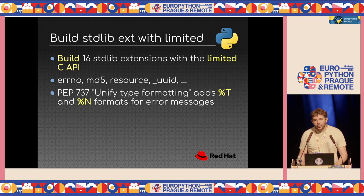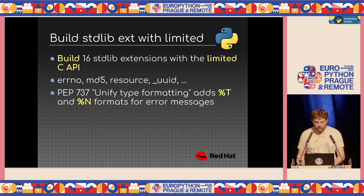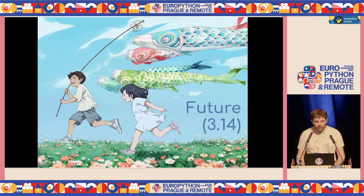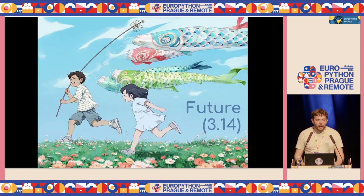For that work I also had to write PEP 737, unified type formatting, to format a type name in an error message. The PEP adds two new format specifiers: `%T` (percent uppercase T) and `%N` (percent uppercase N).